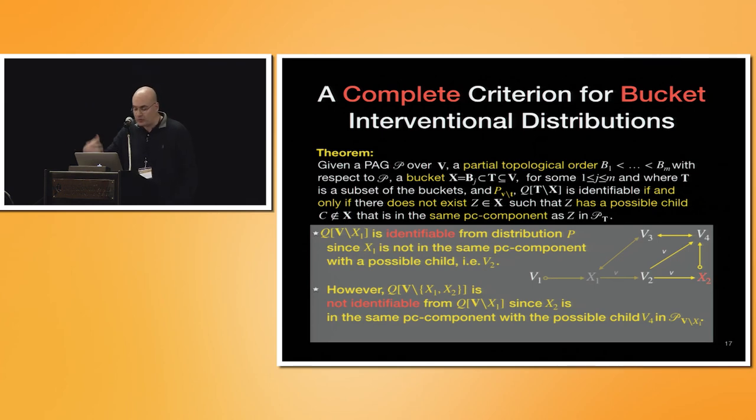However, if you do this incremental, if you want to get the effect of X1 and X2 in V or all other guys, V minus these guys, then it turns out to not be identifiable because there is X2, the possible child is V4, and there is a bubble there. It can have a latent variable between them. Then it cannot identify that.